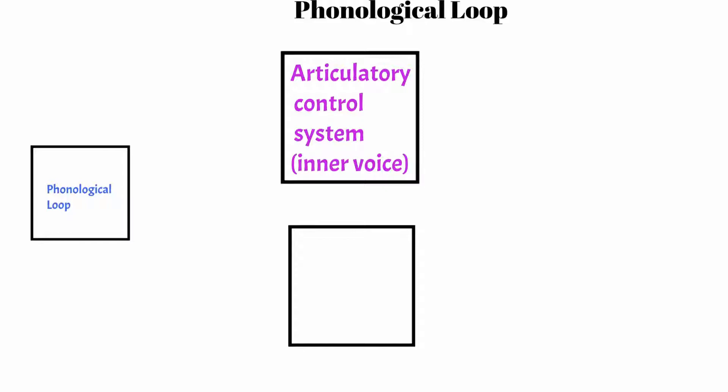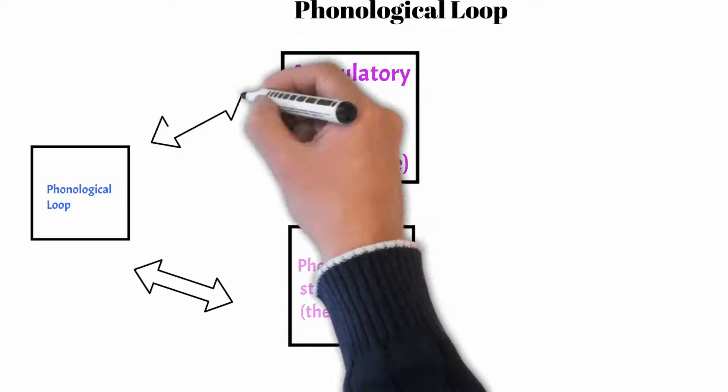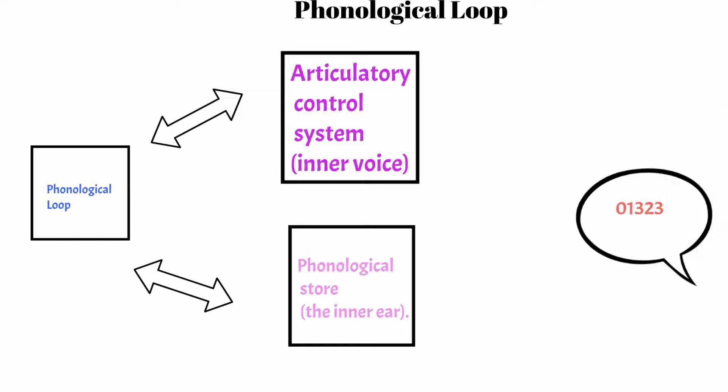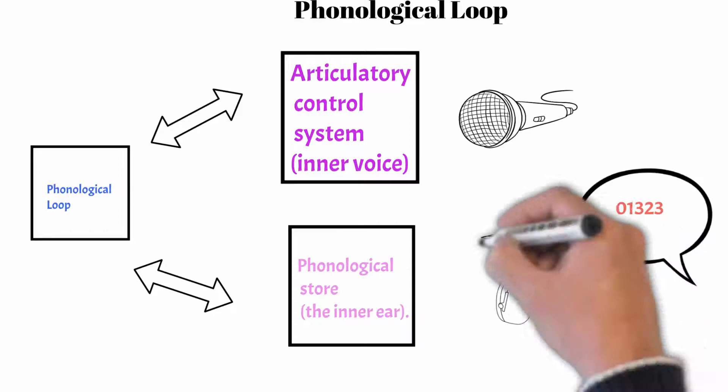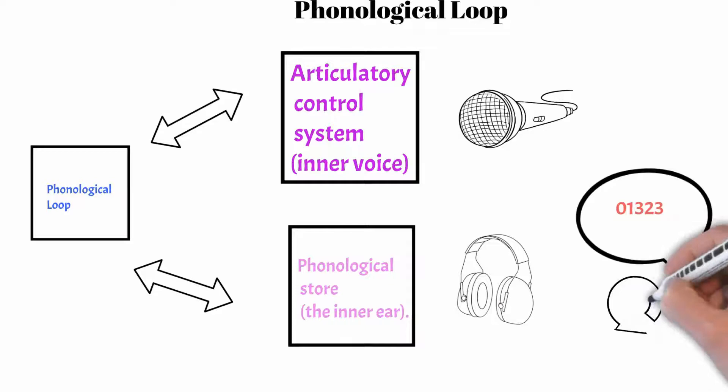Suppose someone says a telephone number to you. As you hear the number, the phonological store decodes the information into the numbers. The inner voice puts information into a linguistic form, so you hear the numbers again as you repeat them trying to remember it. If you say a telephone number in your head to try to remember it, you are using the articulatory control system.